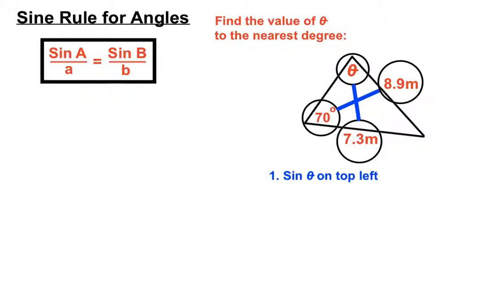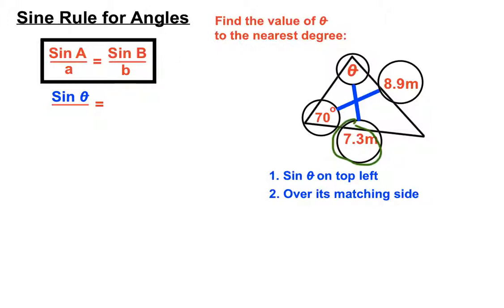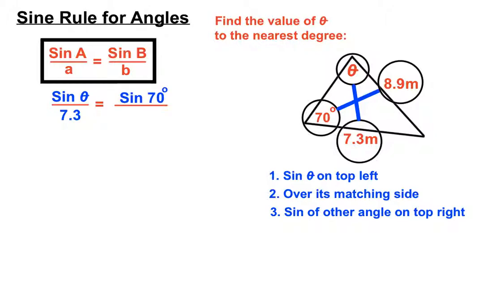Step one — we always put our missing thing on the very top left. So sine theta will go on the top left, over its matching side. From the diagram, the side matching theta is 7.3, so that goes on the bottom. Then we have sine of the other angle, which is 70 degrees, on the top right, over the other side we haven't used yet, which is 8.9. Sine 70 and 8.9 are closely related.